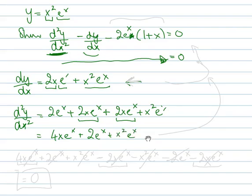OK, now let's plug all of this back into the original equation. So what do we get? We get the second derivative first, so let's write that out: 4x e to the x plus 2 e to the x plus x squared e to the x.